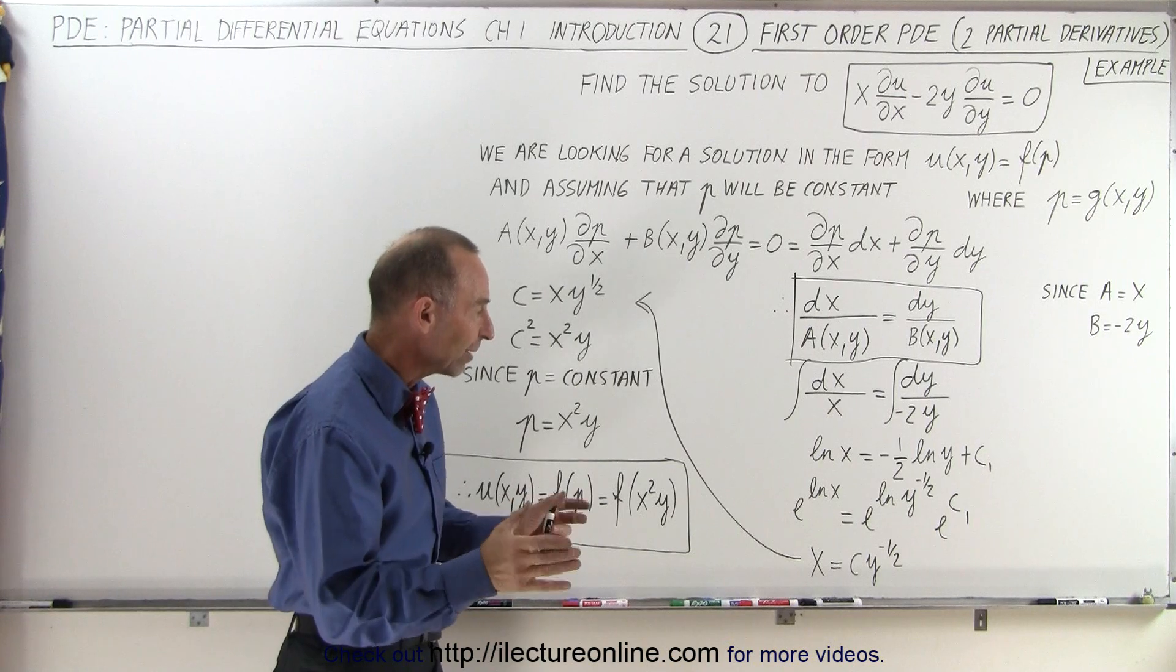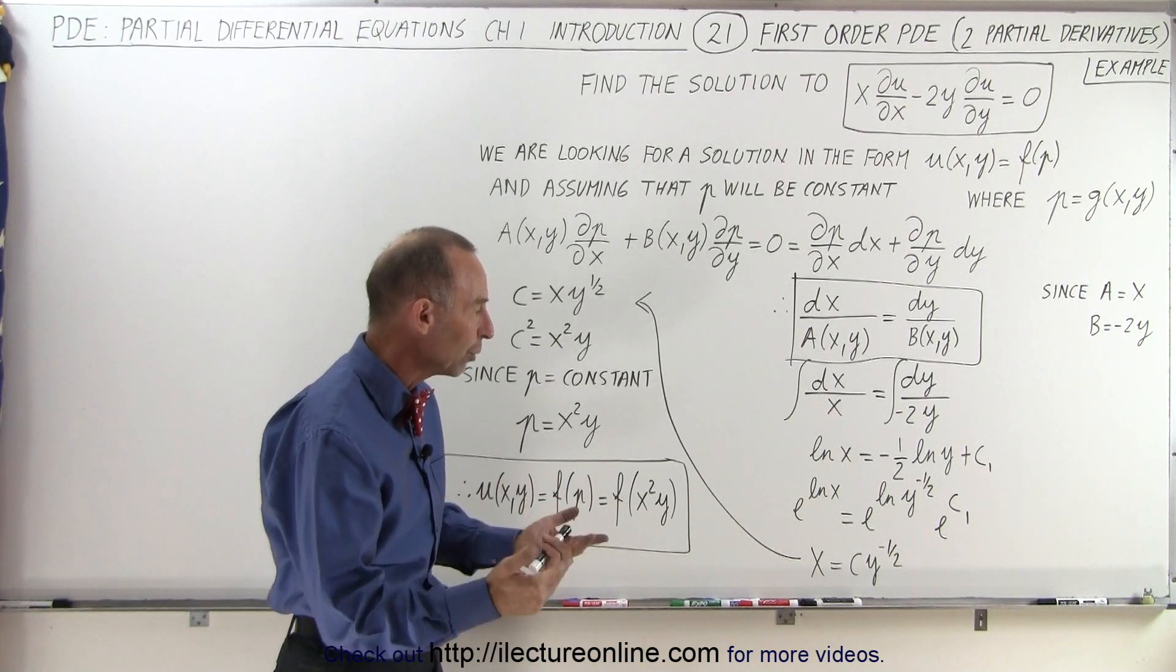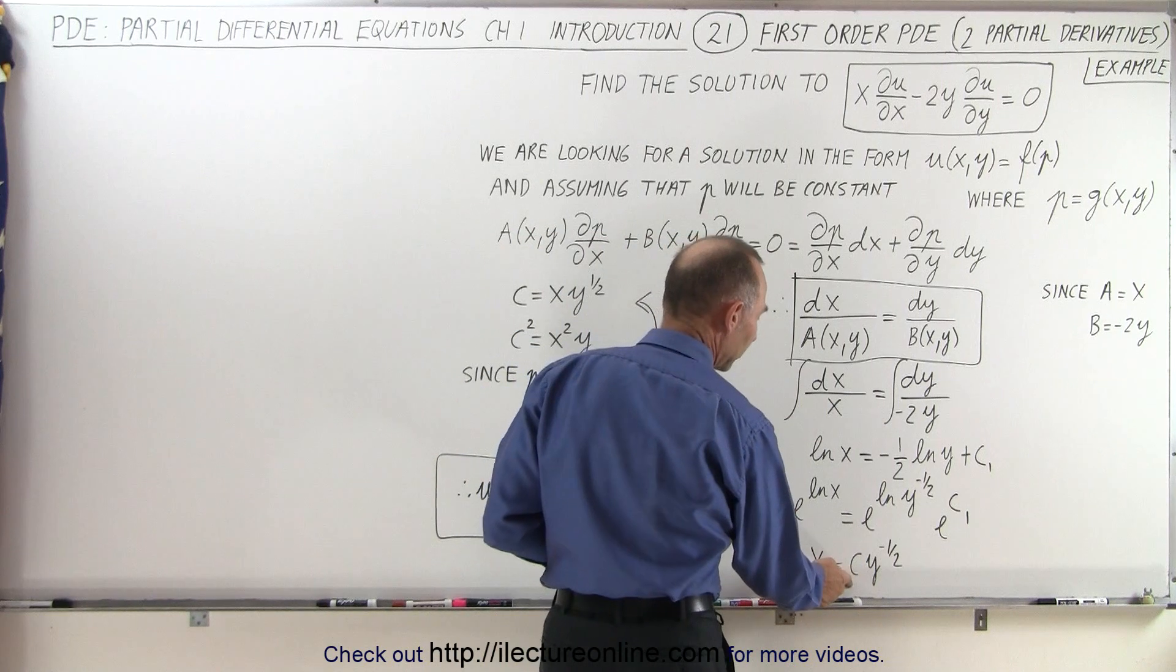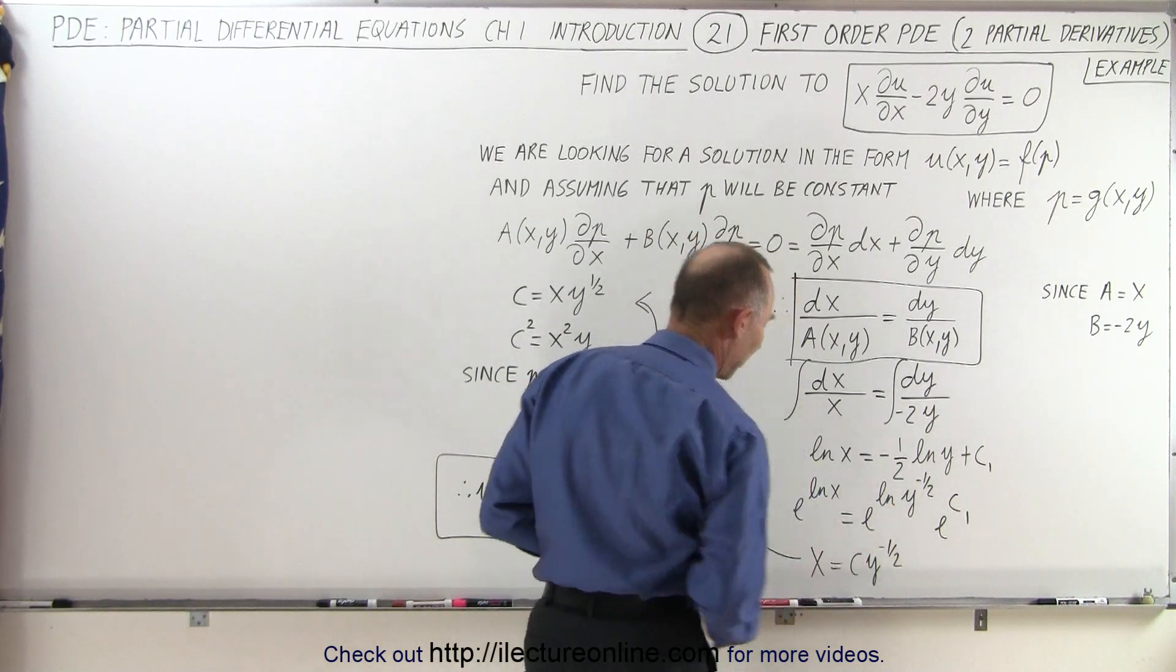Then taking the left and the right side and writing as the exponent of e, we end up with x equals a constant times y to the minus 1 half power.